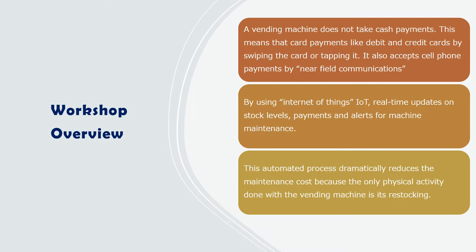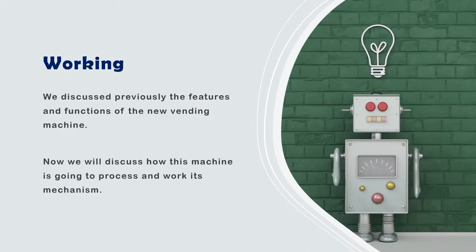Sometimes we can see in some machines the item is totally finished. At that time, when the machine knows the stock is completely over, it can alert and give a reminder to restock it again. If the machine does not work properly, it also gives a sign and alerts that the machine is under maintenance, which dramatically reduces cost.